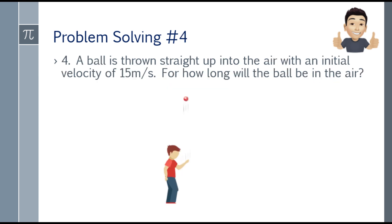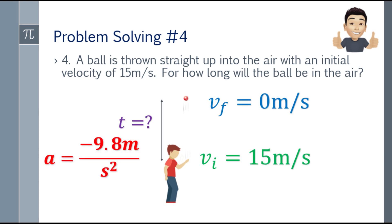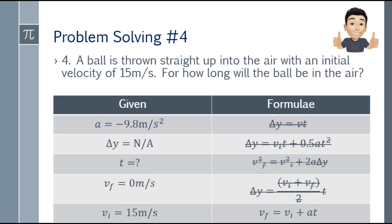Fourth problem: a ball is thrown straight up with an initial velocity of 15 meters per second. For how long will the ball be in the air? Acceleration is negative 9.8 meters per second squared. Final velocity is 0 meters per second — because at the very top, just before it comes back down, the velocity is zero. Initial velocity is 15 meters per second.